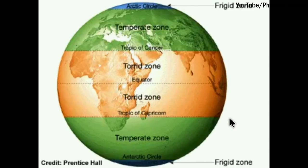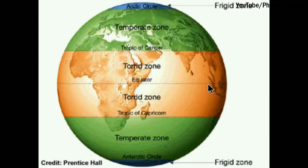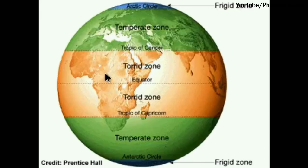Before starting with the chapter, let us understand the different heat zones in our earth. This is the equator — the middle of the earth at zero degrees. Above the equator in the north we have the Tropic of Cancer, and in the south we have the Tropic of Capricorn. The zone between them is called the Torrid zone, which receives most of the sun rays, so its temperature is highest.